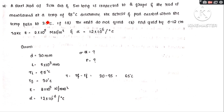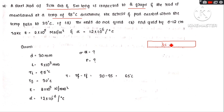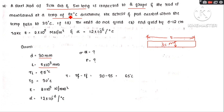Next problem: a steel rod of diameter 3 centimeters and 5 meters long is connected to two grips. The rod is maintained at a temperature of 95 degrees Celsius. There is a uniform temperature in this rod, and the two ends are supported by grips.